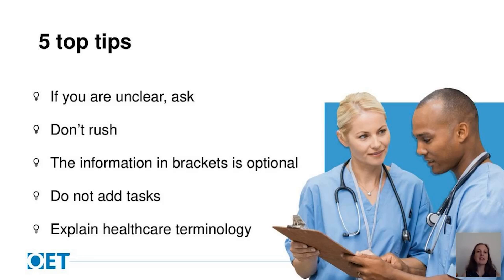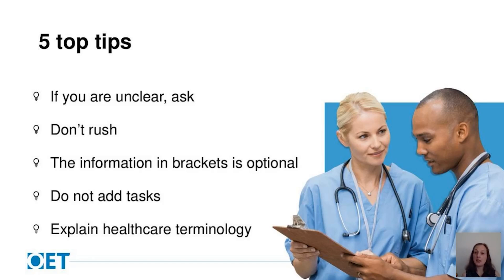Tip number three: the information provided in brackets on your role card is optional, and if you decide to use it you may need to alter the language or think about how or when you say it to keep the patient feeling comfortable. Tip number four: don't add to the tasks — even if your healthcare training tells you to take a complete history, if it's not on the card you don't need to do that for OET purposes. And finally: if you use healthcare terminology, make sure you explain it to the patient and check that they're familiar with it — use lay language wherever possible.